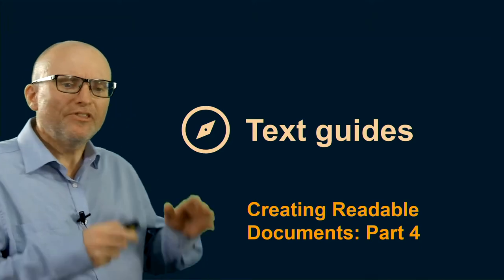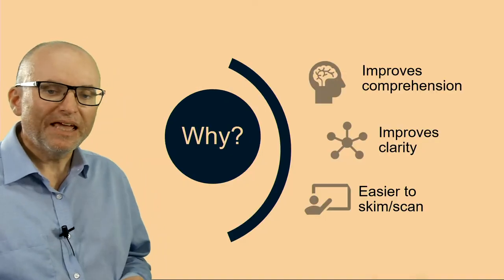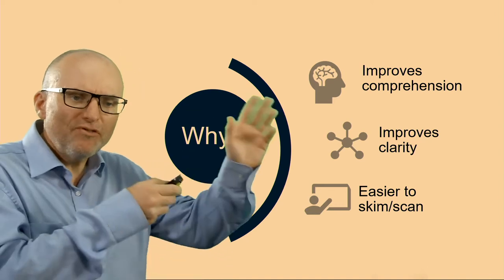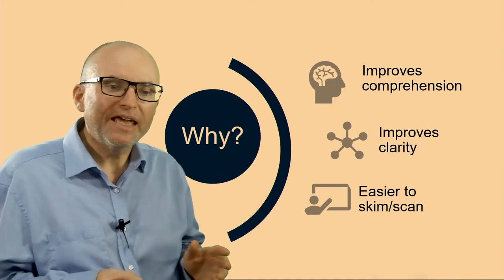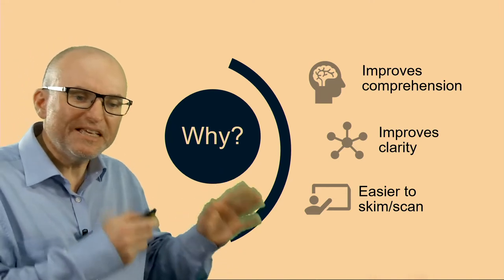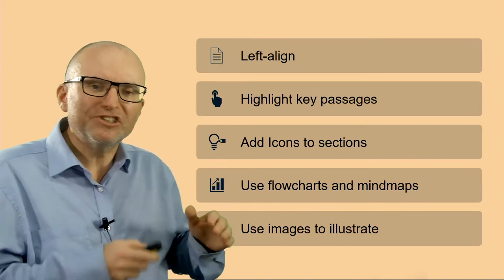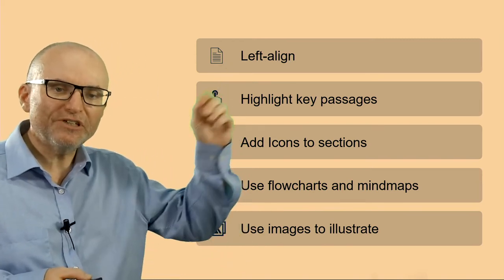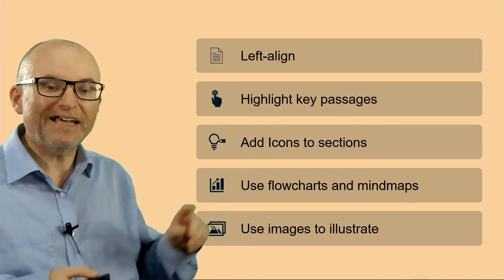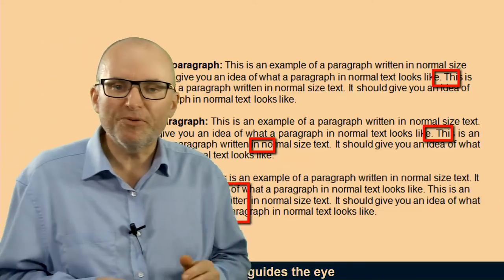In this video, we're going to have a look at the third principle of readable documents, which is text guides. Why should you add additional guides to your text? They improve comprehension, which is really important, and also the clarity of the document. They make it easier to skim and scan. There are a few things you can do: make sure you left-align your documents, highlight key passages, add icons to sections, use flowcharts and mind maps, and use images for illustration.